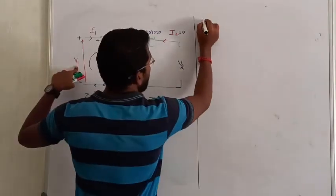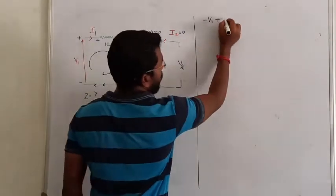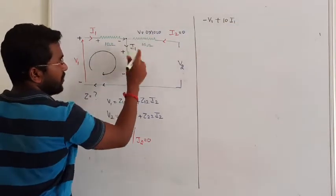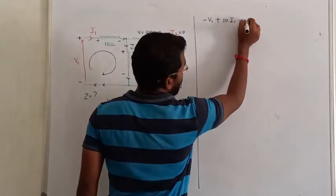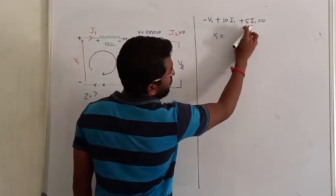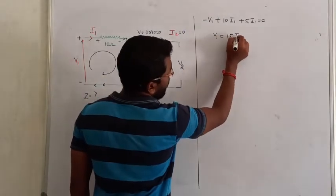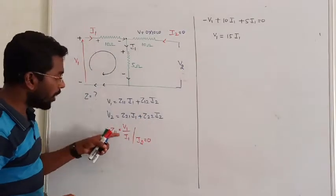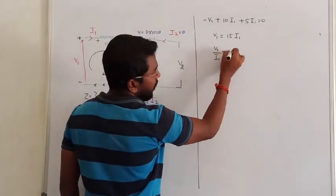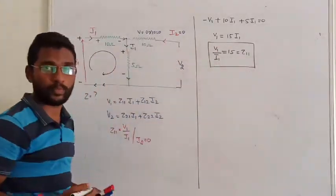Applying KVL: minus V1 plus 10·I1 plus 5·I1 = 0. So V1 = 10 + 5 = 15·I1. Therefore, the ratio V1 to I1 is called Z11. So Z11 = 15 ohms.